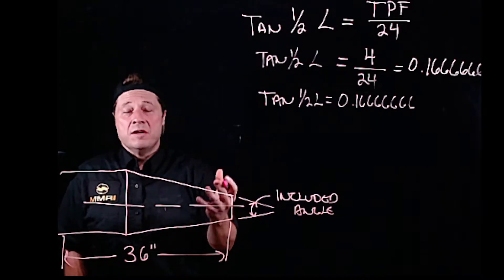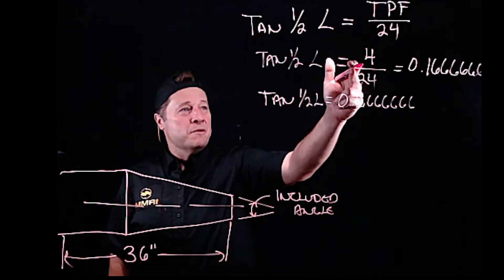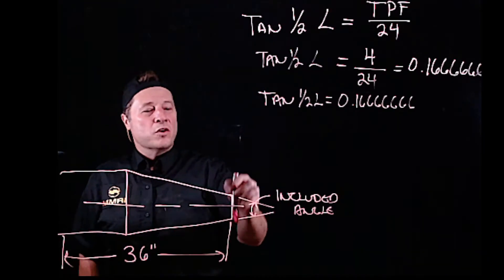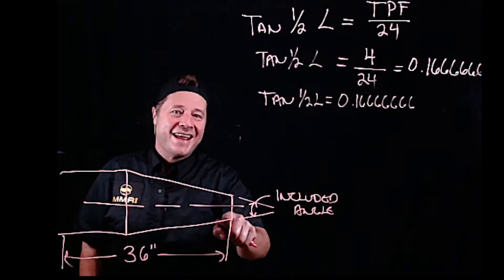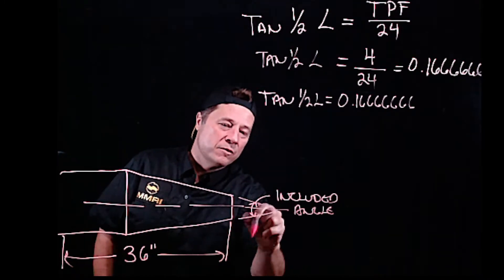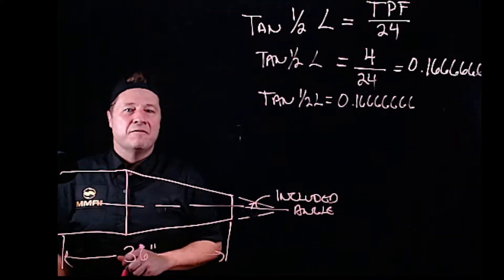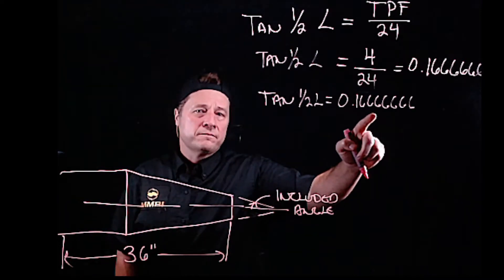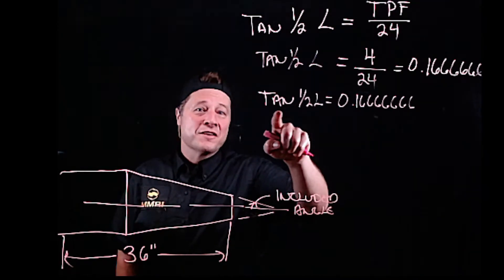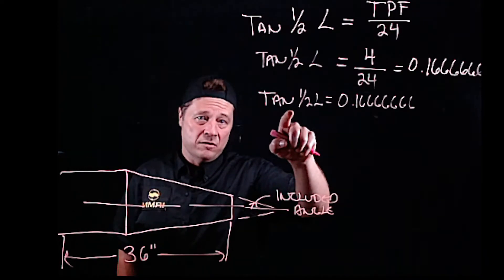We've done fractions. We've taken a common fraction, solved it, we've got a decimal fraction. We're trying to solve an angle. We're trying to solve half of the angle. This is not an angle, this is a decimal fraction. But this tells us how to turn it into an angle.